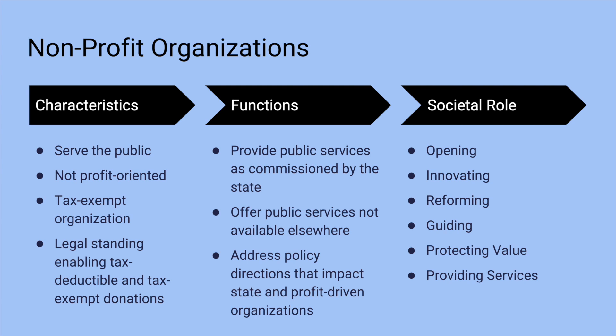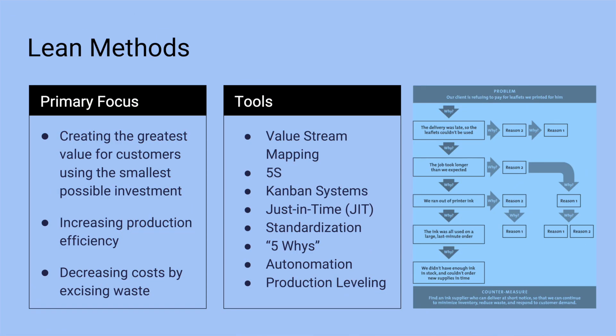Lean Six Sigma is the combined use of lean methods with Six Sigma practices. Lean methods focus on creating the greatest value for customers using the smallest possible investment by increasing production efficiency and decreasing costs by excising waste that does not create value.